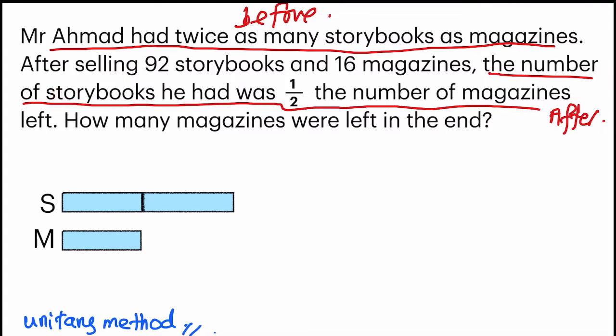He said that the number of storybooks he had was half. So assuming that he had sold this amount, and this portion becomes one unit. And since storybooks was half the number of magazines, magazine should have twice or two units. So it should be here. There are two units here.